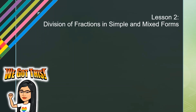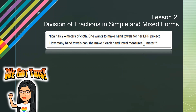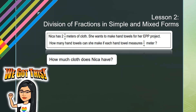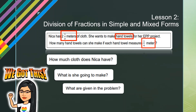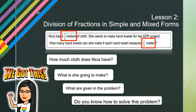Let us proceed with Lesson 2: Division of Fractions in Simple and Mixed Forms. Nika has two and one half meters of cloth and wants to make hand towels for her EPP project. How many hand towels can she make if each hand towel measures one fourth meter? Nika has two and one half meters of cloth, and she is going to make hand towels. The given values are one fourth meter per towel and two and one half meters of cloth total.